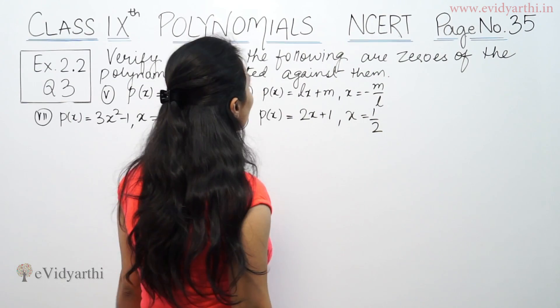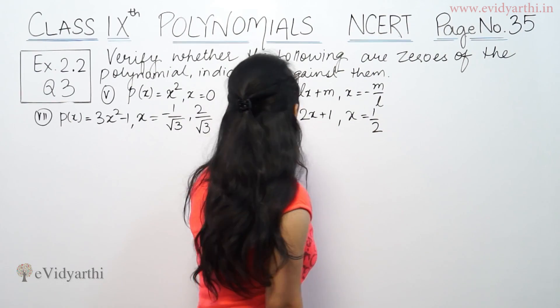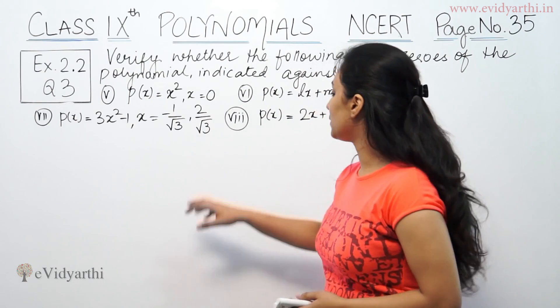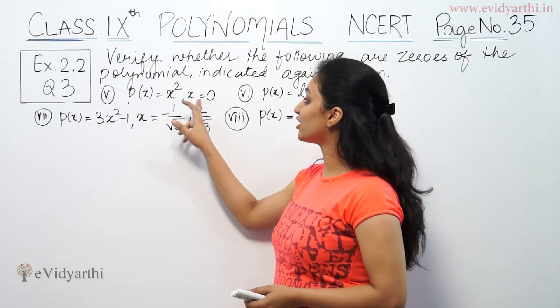This question is to verify that the following are zeros of the polynomials indicated against them.